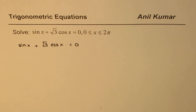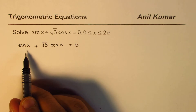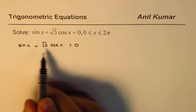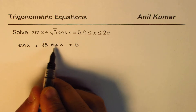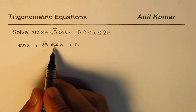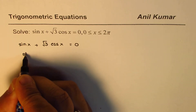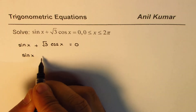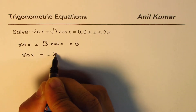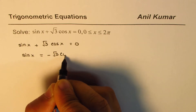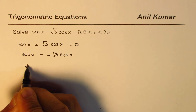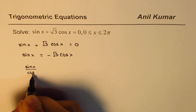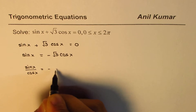Normally you will see that we work with one variable, but sometimes you can work with two variables, as we have sin x and cos x here. The trick to solve this is we take square root 3 cos x to the other side and then divide by cos x. So we write this as sin x equals minus square root 3 cos x, and dividing both sides by cos x gives sin x over cos x equals minus square root 3.